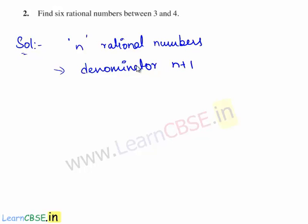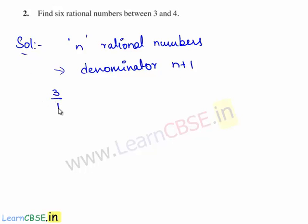Here in the question we need six rational numbers between 3 and 4, so we express the rational numbers 3 and 4 with denominator as 7. So let us find the equivalent rational numbers. Let's multiply 3 by 1 with 7 on both the numerator and denominator.